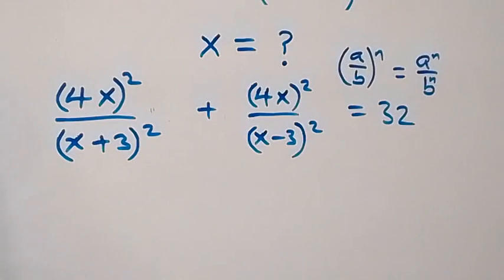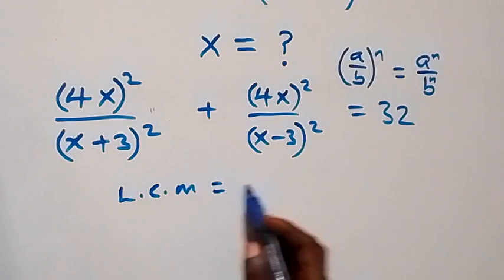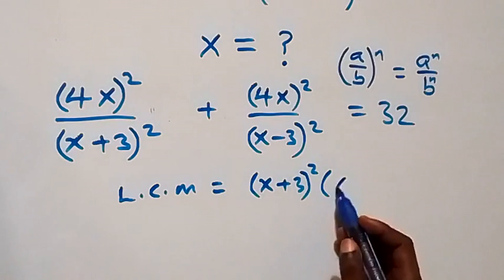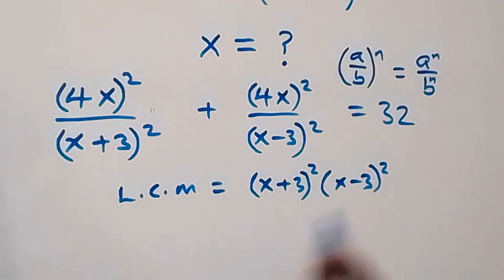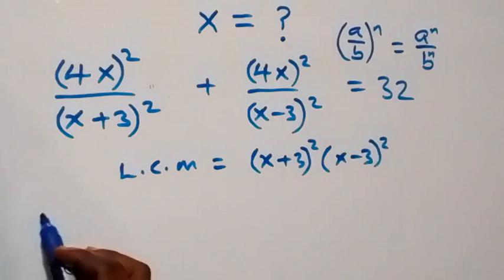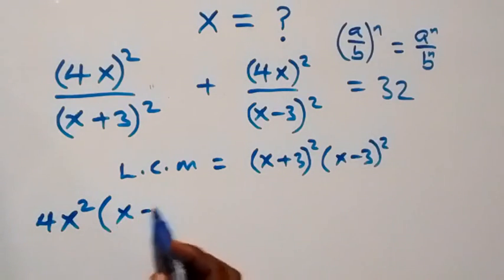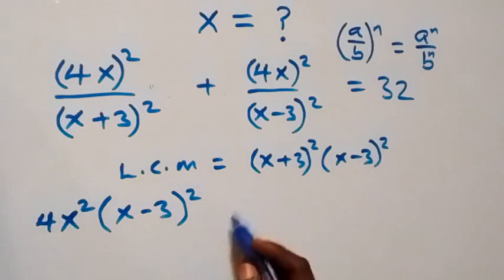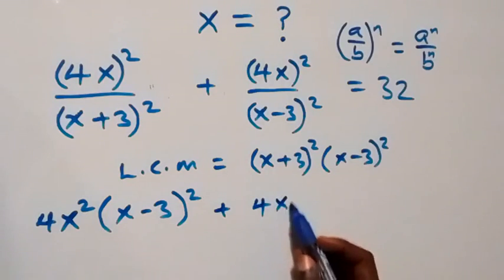The LCM here is (x+3)² multiplied by (x-3)². When we use this to multiply through, on the first term we are left with 4x² into bracket (x-3)², because (x+3)² cancels with (x+3)².